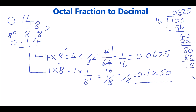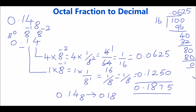Now we have to sum 0.0625 with 0.1250. Adding: 5 plus 0 is 5, 2 plus 5 is 7, 6 plus 2 is 8, 0 plus 1 is 1. So the octal number 0.14 base 8 can be written as 0.1875 base 10.